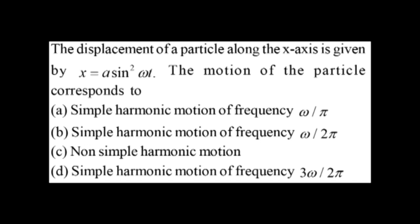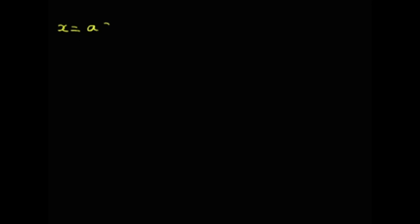The displacement of a particle along the x-axis is given by x = A sin²(ωt). The question asks whether the motion corresponds to: SHM of frequency ω/π, SHM of frequency ω/2π, non-simple harmonic motion, or SHM of frequency 3ω/2π. The given function has sine squared, not the standard first-power sine or cosine, so we need to confirm whether this is SHM.